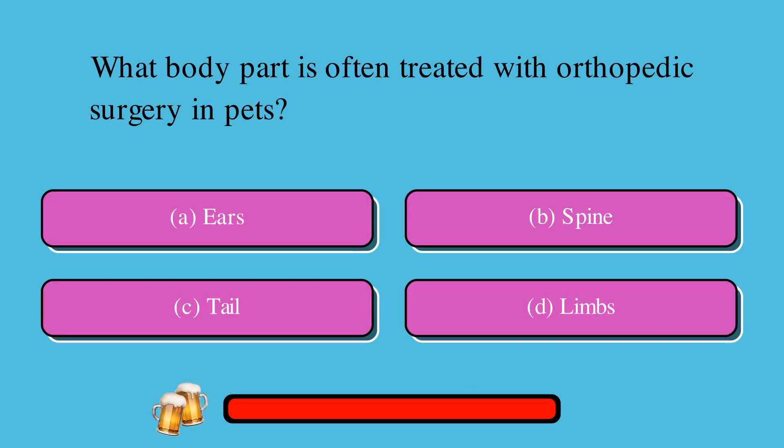What body part is often treated with orthopedic surgery in pets? A. Ears, B. Spine, C. Tail, or D. Limbs.